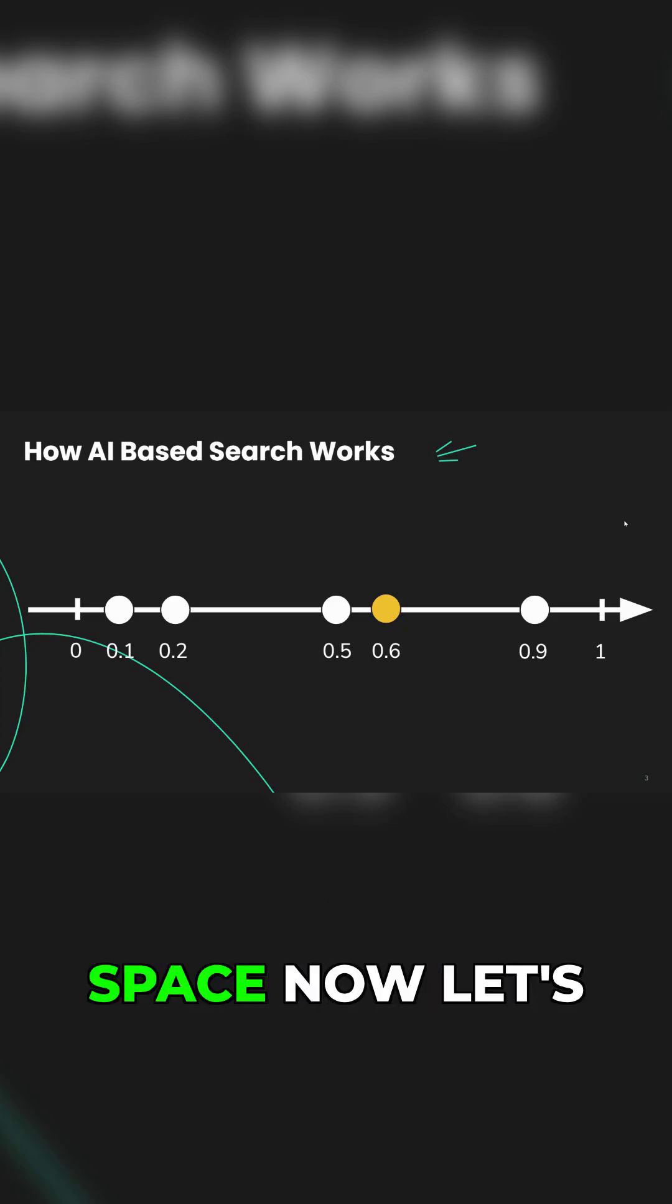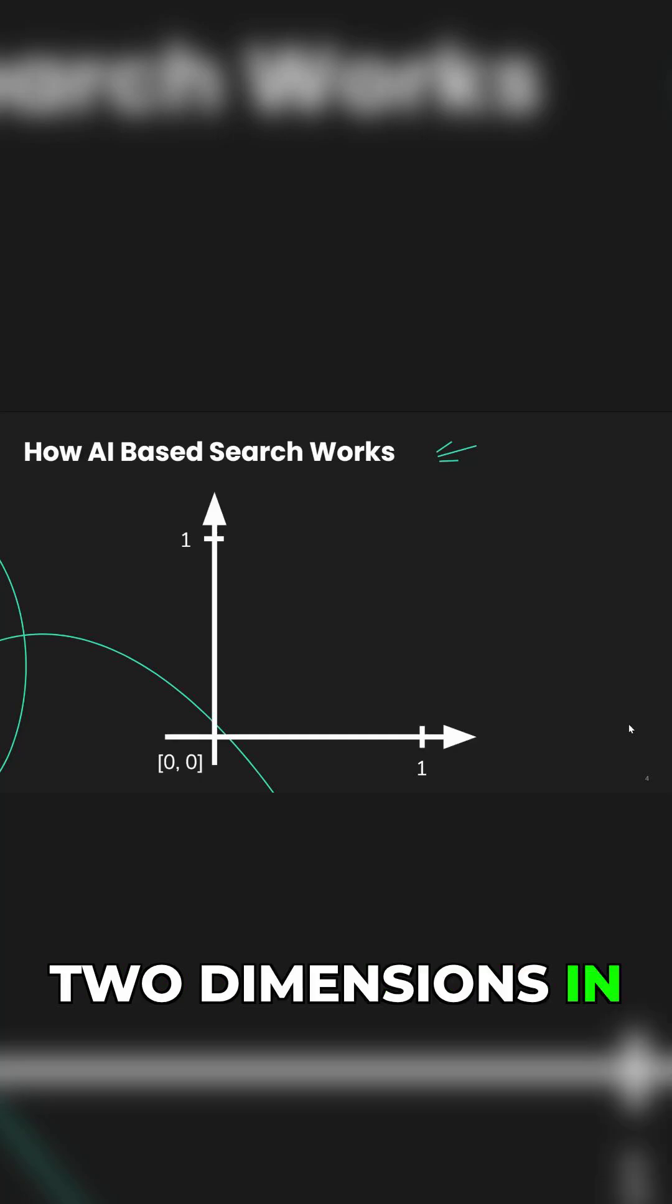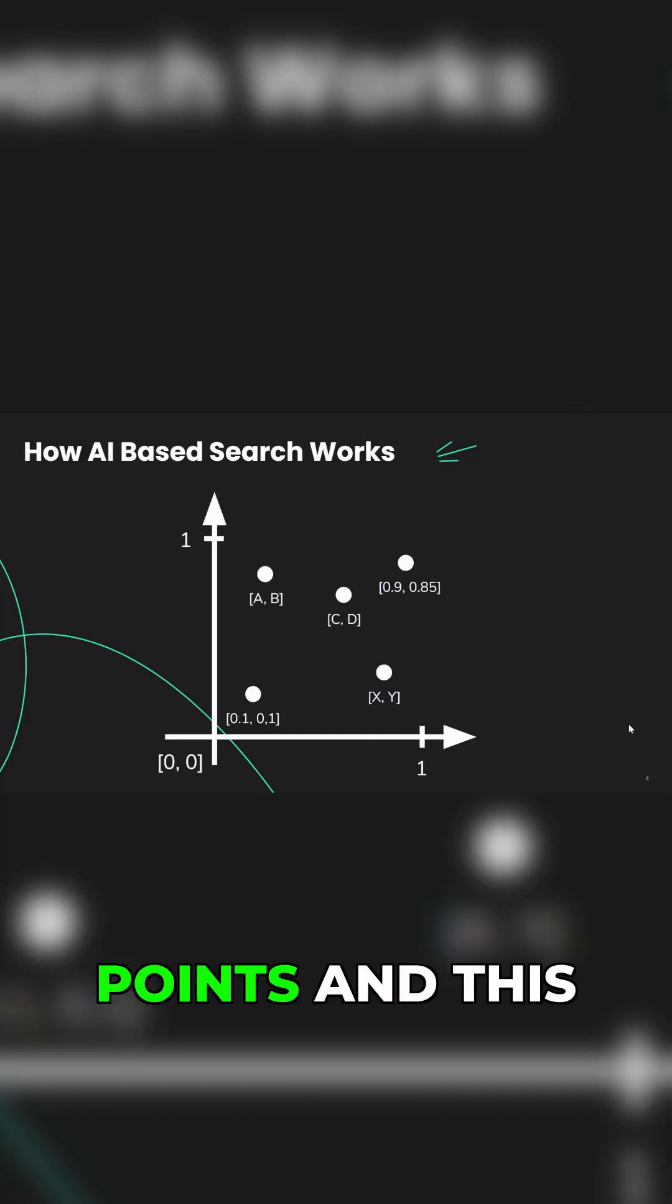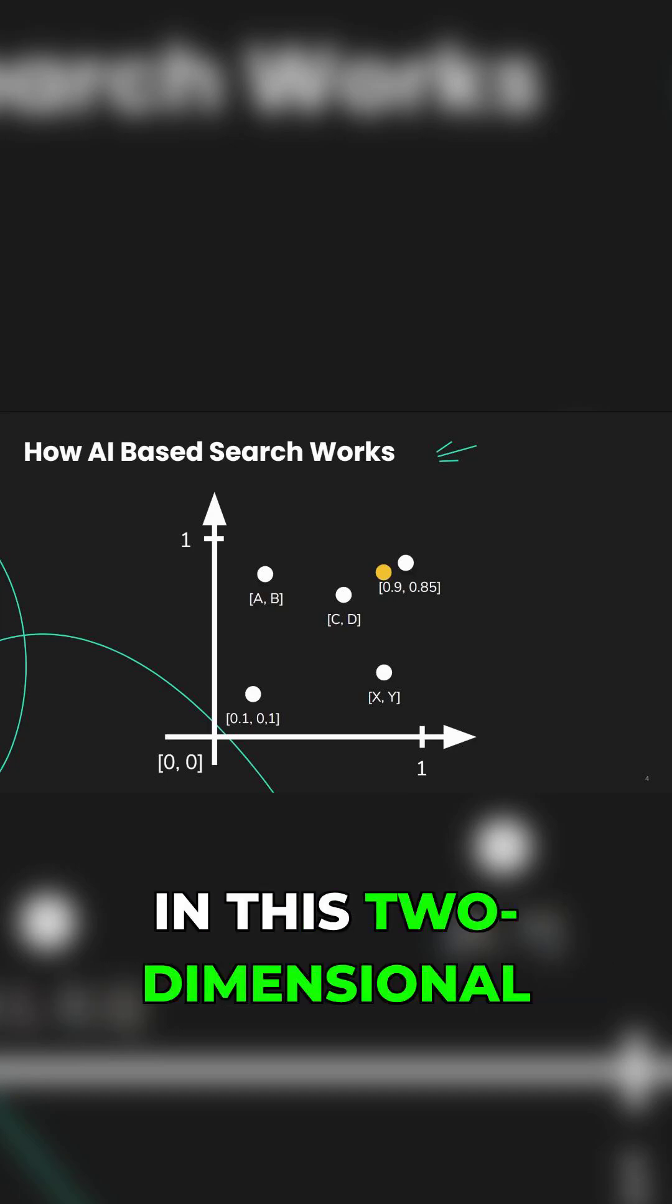Now let's move this into two dimensions. In this case we have a bunch of points, and this is the target point. We want to find the closest point in this two-dimensional space, and this is going to be the closest point.